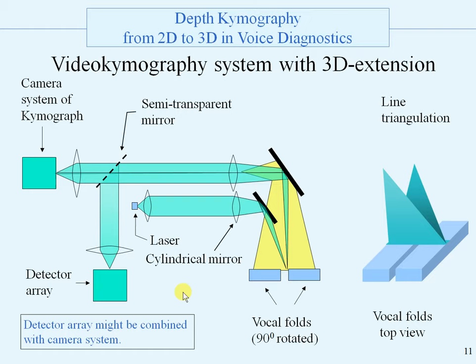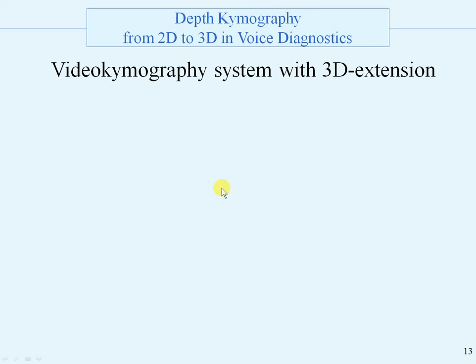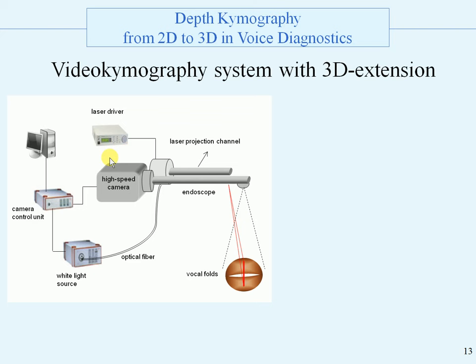This is the idea of line triangulation. The laser beam comes in, and depending on the height of the target, the reflection is detected at a different position of the array. This is an overview of the instrument. Here is the high-speed camera with the optical axis for normal videokymography recordings, and here is the laser projection channel with the cylindrical lens producing a line image.